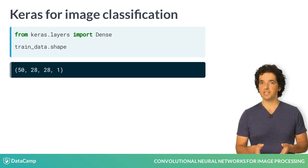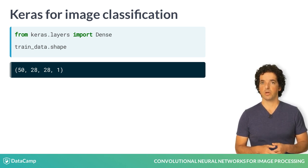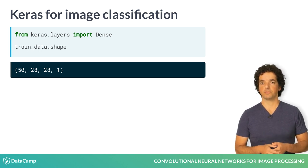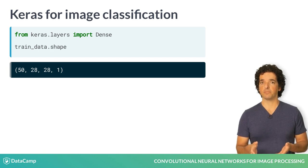The training data in this case are images of clothes: 50 samples, each of 28 by 28 pixels. The last dimension has length 1, because the images are black and white. 50 is a rather small number of training samples, but we'll use that here for simplicity, so that the training proceeds rapidly.